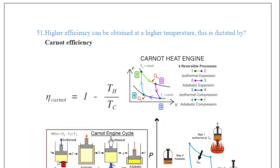The third step is the reversible isothermal gas compression process. Here, the heat loss Q-out occurs when the surroundings do work at temperature T1. The fourth step is adiabatic gas compression — again the system is thermally insulated, and the temperature rises back to TH as the surroundings continue to do work on the gas. Overall there are four steps, and it is very important to know about the Carnot engine.